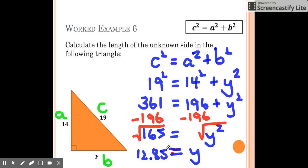12.85 to two decimal places. Now some of you would like to write that with the Y on this side, and it gives you the room to write the decimal places, so your final line can be Y equals 12.85.